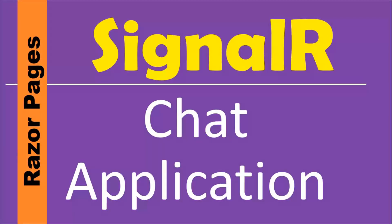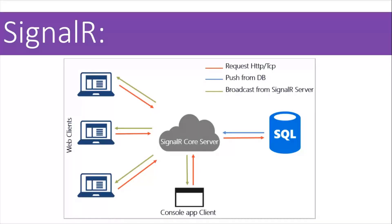We are going to create a chat application using SignalR inside ASP.NET Core Razor Pages. The first question is: what is SignalR? SignalR is a mechanism for two-way communication. There is a difference between SignalR and Web API. In Web APIs, the client sends a request to the server for some information and the server sends the information back, but the server cannot send information on its own. In SignalR, clients remain connected with the server.